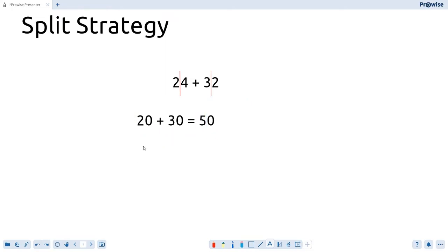The second step of the split strategy in this case is to add the units or the ones. We've got four ones and two ones here, so we're going to write 4 plus 2 for our number sentence, and that equals 6 for us.